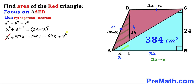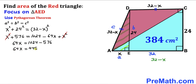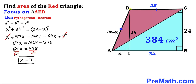The x² terms cancel. Moving 64x to the left and 576 to the right gives 64x = 1024 − 576, so 64x = 448. Dividing both sides by 64, x = 7. Substituting back: 32 − 7 = 25, so CD = 25 cm.